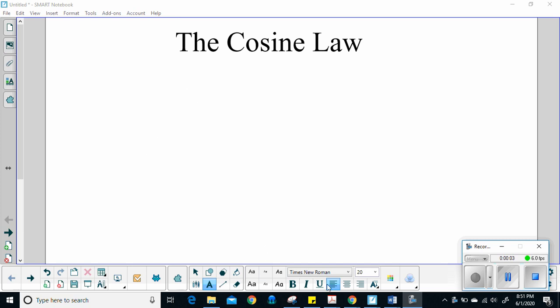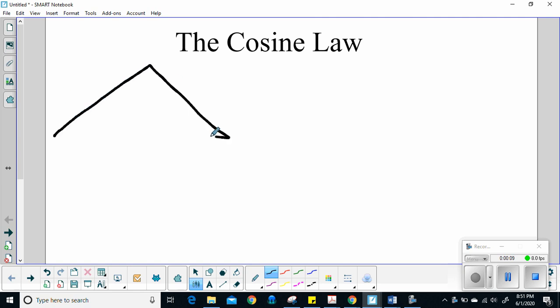Alright, so cosine law is another way to solve non-right-angle triangles. In this case, we're still going to label the same way we did with sine law. We've got our capital letters for our angles, and our little letters are opposite from our big letters and they represent our side lengths.